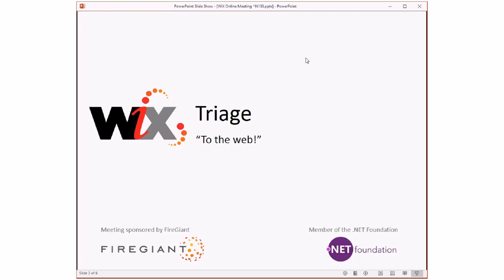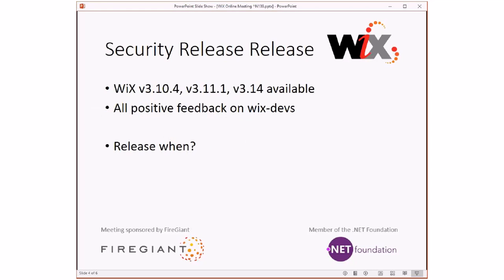Alright, that's triage — I expected it would go quick. We got rid of one issue and will revisit the other later. Now let's talk about the security release. As sent to wix-devs, 3.10.4, 3.11.1, and 3.14 are all available. I haven't done a 4.0 build — I don't remember if I did. These are the important ones I want to get out anyway.